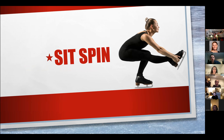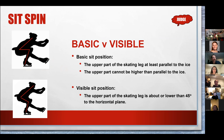Starting with the sit spin: the basic sit position requires the thigh to be parallel to the ice or lower — the upper part of the skating leg is at least parallel to the ice. If it is higher than that, it would not be considered a basic sit position, but could fall under the visible sit position, which is not more than about 45 degrees to the horizontal plane.